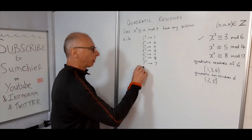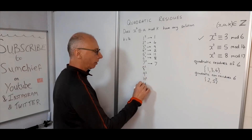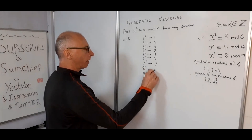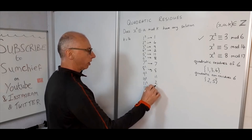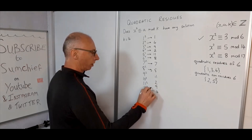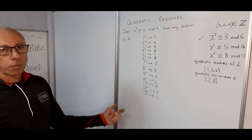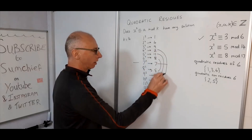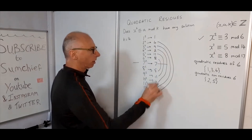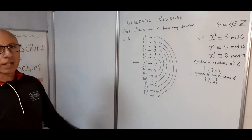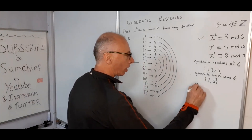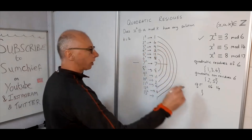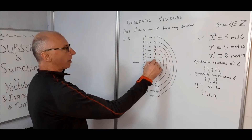Now for 8² through 13², I'll write them without calculating — you can check them. They are: 8, 11, 2, 9, 4, 1. We take 7 as the midpoint and the values are reflected along that. So the quadratic residues of 14 are 1, 2, 4, 7, 8, 9, 11.